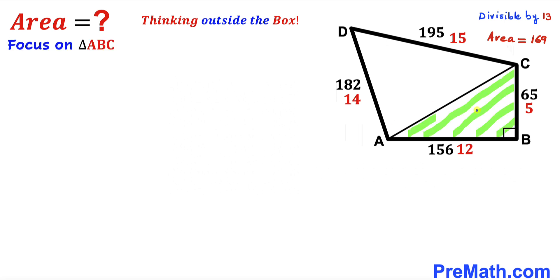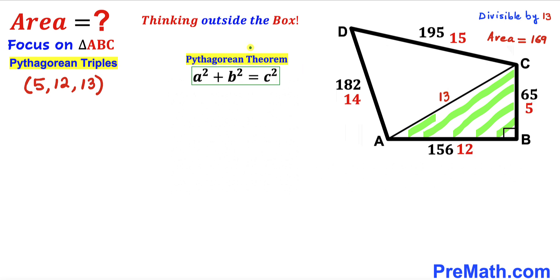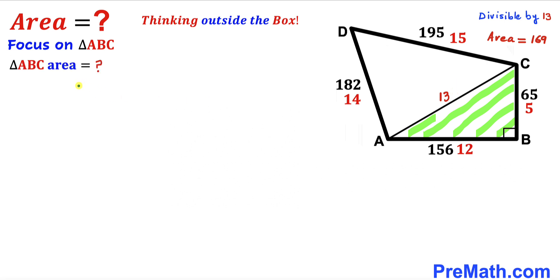Now let's focus on right triangle ABC. We know its side lengths are 5 and 12, and we need to calculate the unknown side length AC. Recalling the well-known Pythagorean triple 5, 12, and 13 — our two legs are 5 and 12, so our hypotenuse AC is going to be 13 units. You may also use the Pythagorean theorem A² + B² = C² to calculate this side length.